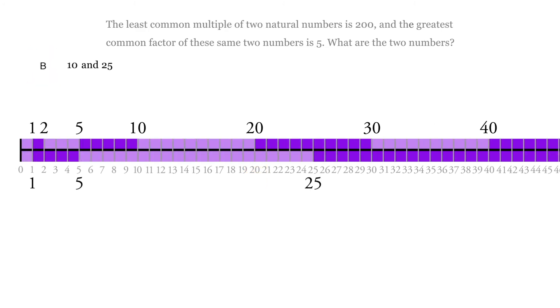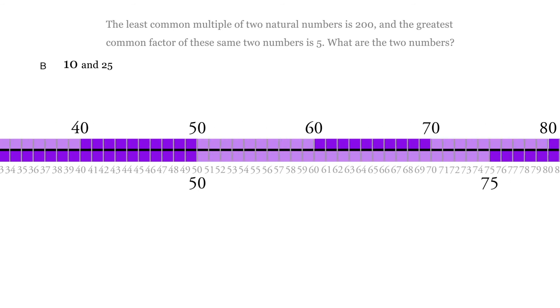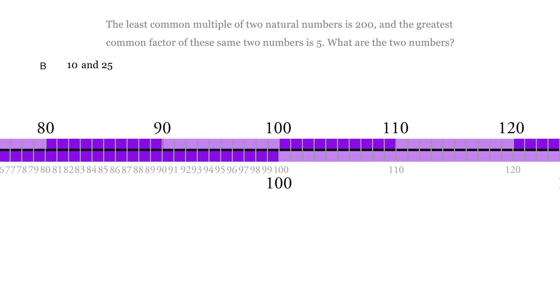And in this one, each one goes cleanly into 100. So 10 goes into 100, and 25 goes into 100. So 200 is not the least common multiple. In that case, 100 is.